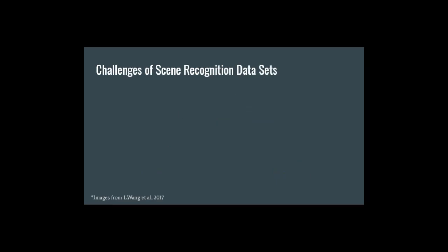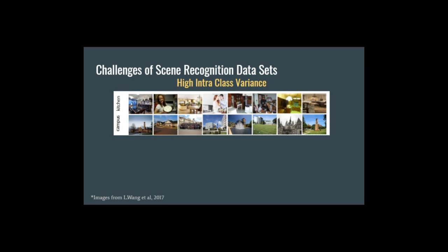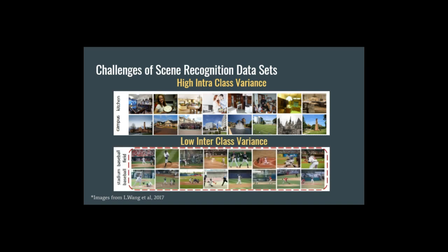We have already established that scene recognition is non-trivial, but which are the related challenges? There are two main challenges, and the first one is high interclass variance. In the image that you see, each row showcases images belonging to the same class. In the first row, we have the kitchen class, and although all of these images depict different kitchens, they are vastly different in appearance, so it becomes difficult to find similarities within images belonging to the same class. The second challenge is low interclass variance, meaning images from distinct classes — in this example, baseball field and baseball stadium — that are very similar to one another, therefore there is no clear-cut distinction between the two classes.